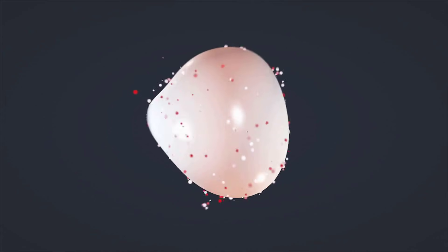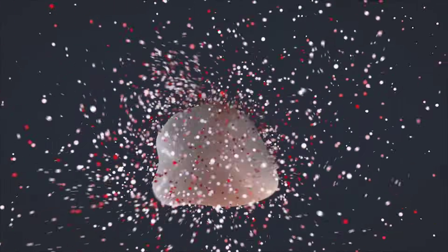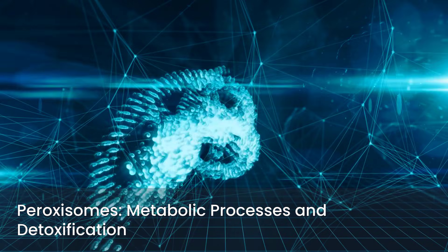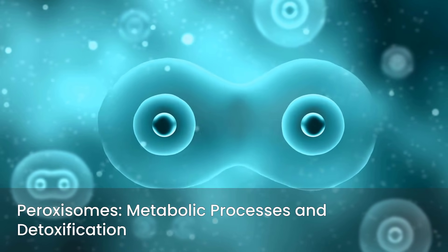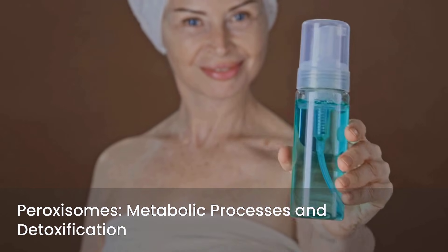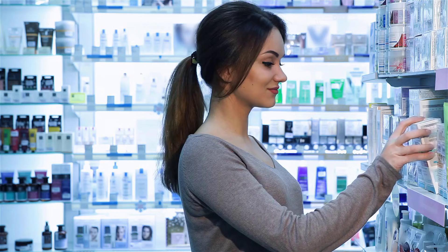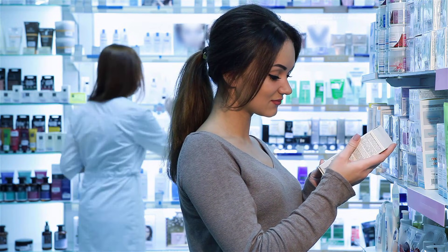Lysosomes are the cell's recycling centers. They contain hydrolytic enzymes that break down waste materials, cellular debris, and foreign invaders, and are essential for cellular waste disposal and nutrient recycling. Peroxisomes are small organelles involved in various metabolic processes, including fatty acid breakdown. They also play a vital role in detoxification, neutralizing harmful reactive oxygen species. You must understand how these organelles interact and cooperate, as this integrated understanding is key to grasping complex physiological and pathological processes.